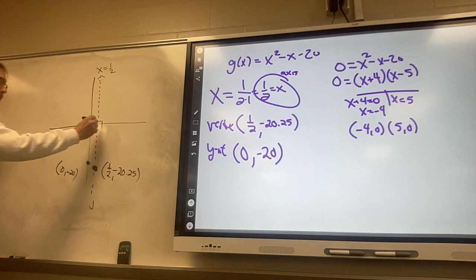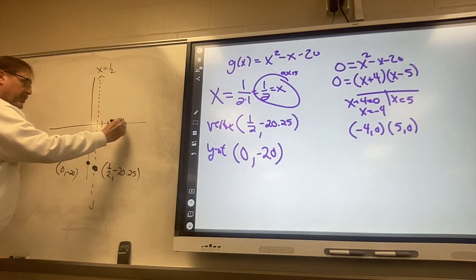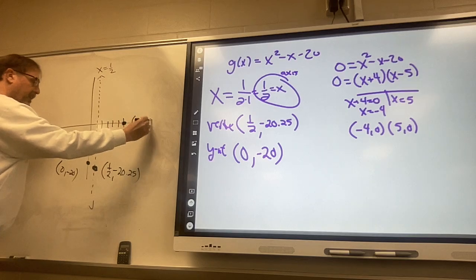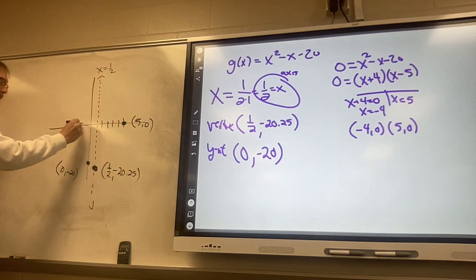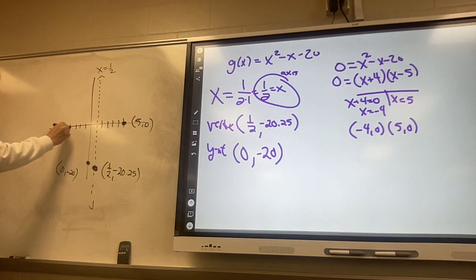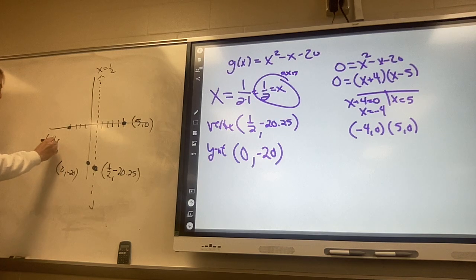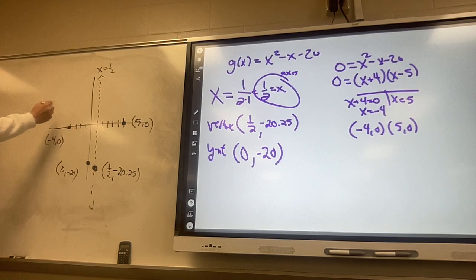I think I'm getting this. Our zeros are at five comma zero, so one two three four five. And I changed my mind in the middle of the teaching - we are going to write five comma zero and negative one two three four, negative four comma zero. Those are the important points I want.